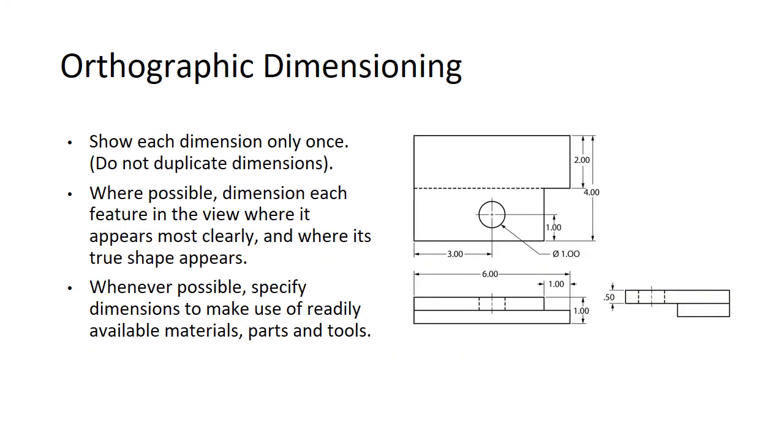And we'll touch base on that maybe. Show each dimension only once. We don't duplicate dimensions. We don't put a dimension on the front view and the top view and then another one on the side view. Where possible, dimension each feature in the view where it appears most clearly and where its true shape appears. When possible, specify dimensions to make use of readily available materials, parts, and tools. So this is relatively clean dimensioning and what it should look like.